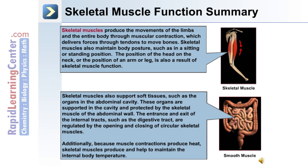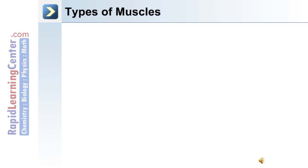Skeletal muscles also support soft tissues such as organs in the abdominal cavity. They are supported and protected by the skeletal muscle of the abdominal wall. The entrance and exit of internal tracts such as the digestive tract are regulated by the opening and closing of circular skeletal muscles. Additionally, because muscle contractions produce heat, skeletal muscles help to maintain the internal body temperature.